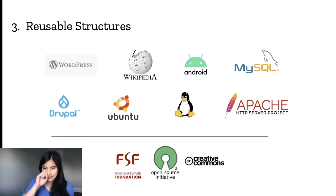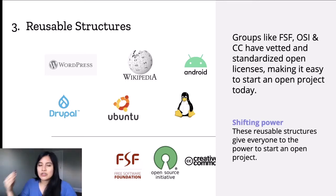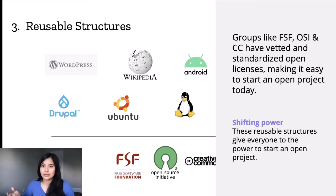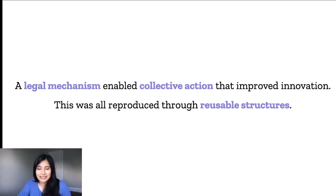The third lesson is reusable structures. We've seen this happen time and again because of groups like the Free Software Foundation, the Open Source Initiative, and Creative Commons, who are embedding and standardizing these open licenses, making it so easy to start an open project today — no lawyer needed, just pick a license. These reusable structures gave everyone the power to start an open project. So: that legal mechanism enabled collective action and improved innovation, and this is all reproduced through reusable structures.